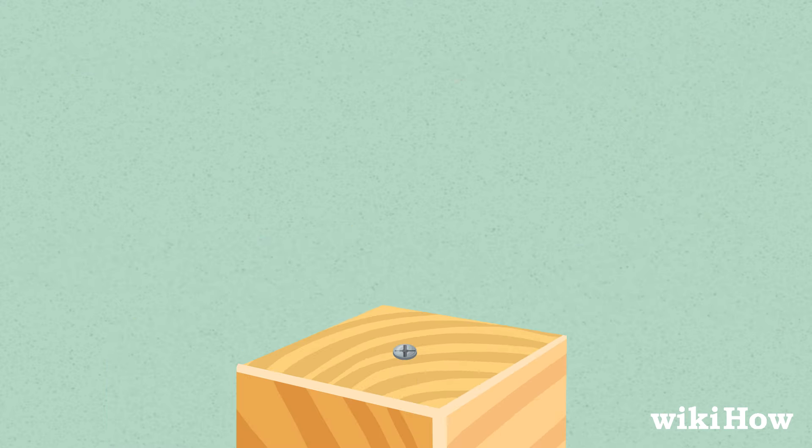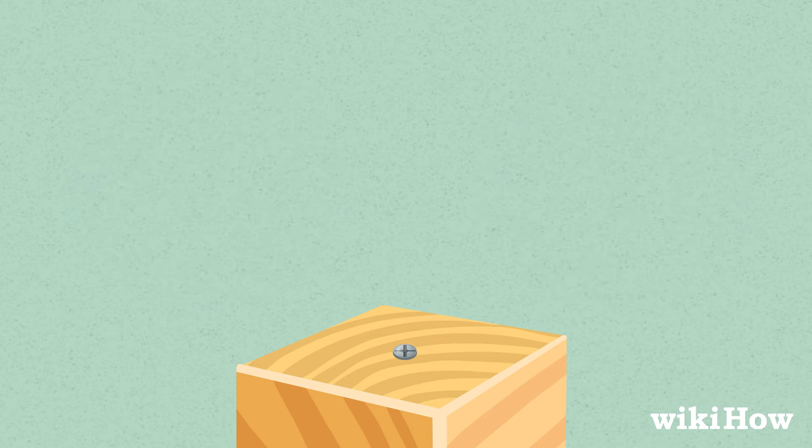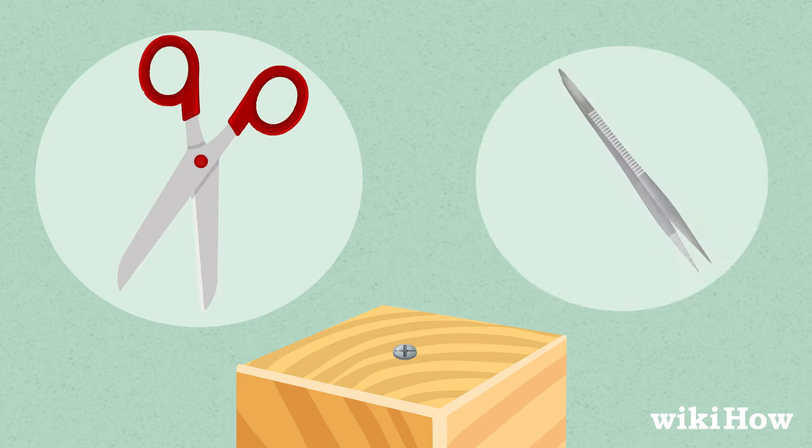For extra tiny screws, use a pointed object, like the tip of a sharp knife or a nail file. You can also try using the tip of a small pair of scissors or tweezers.